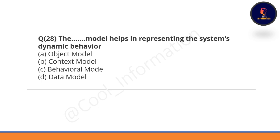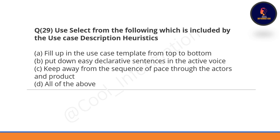Question 28: Which model helps in representing the system's dynamic behavior — object model, context model, behavioral model, or data model? Option C is correct — the behavioral model.